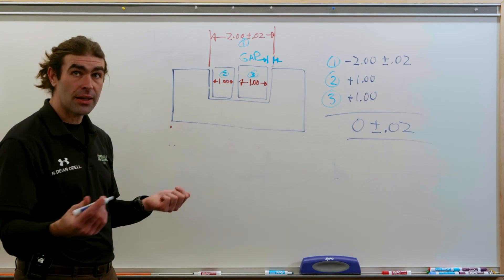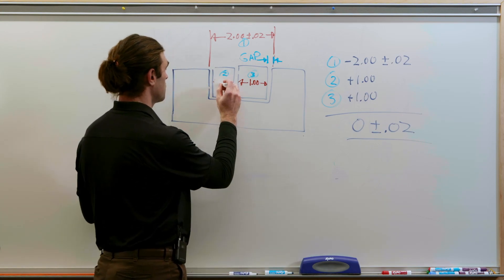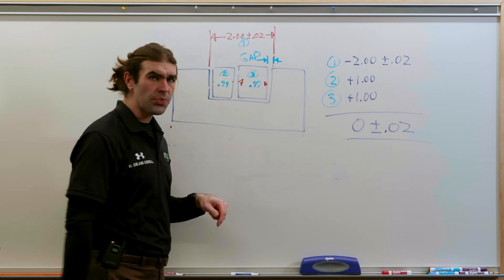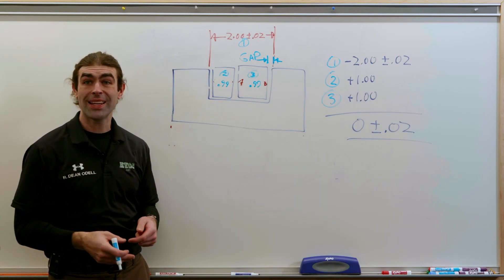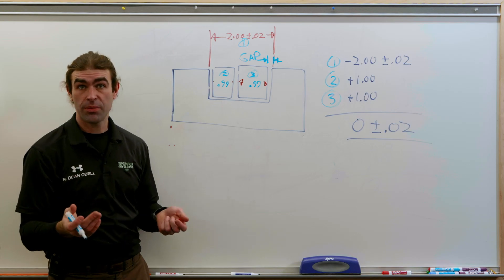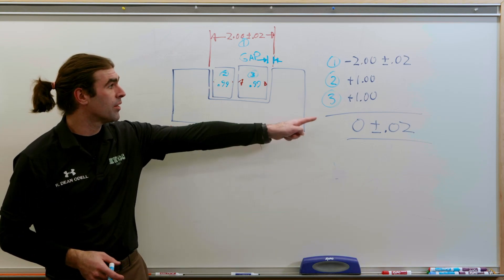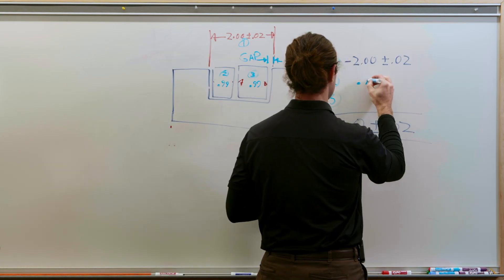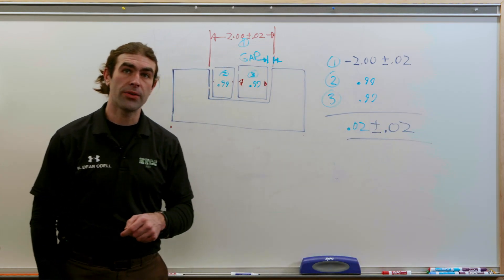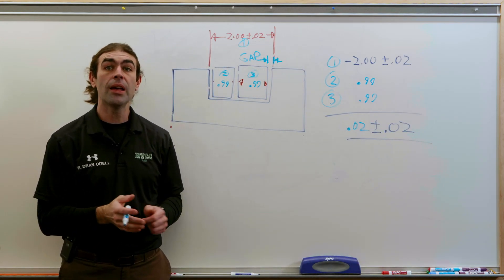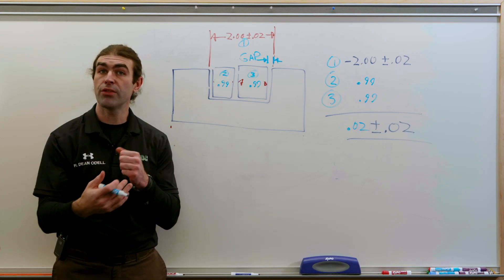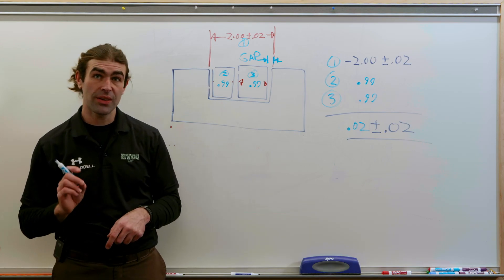You want to put the dimension on the most important thing and control it directly. Now, to make them fit at worst case, all I have to do is change the nominals to 0.99, and this assembly will work correctly. So, we would end up with 20 thousandths, plus or minus 20 thousandths. We could have zero clearance or positive 20 thousandths clearance.